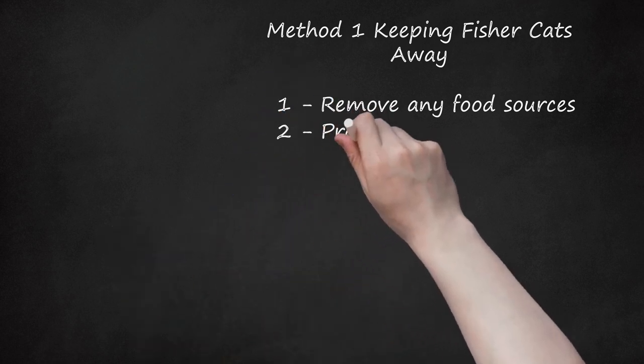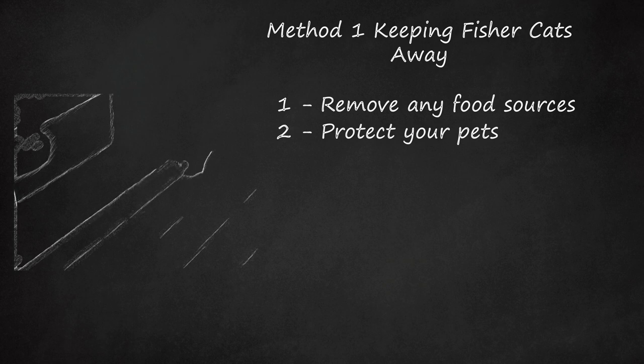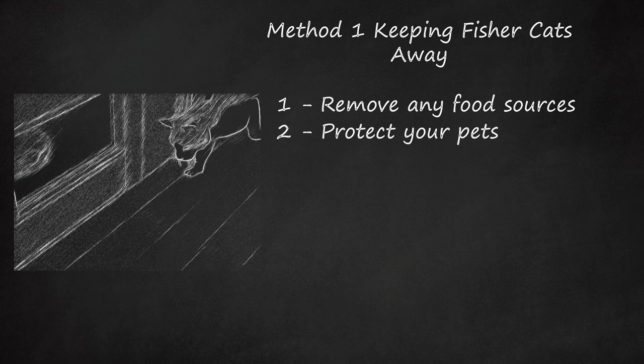Step 2: Protect your pets. Fisher cats are vicious predators, so don't assume that small pets will be any match for them. Protect them to ensure they are safe. Fisher cats have been known to stalk and kill house pets. Occasionally, fisher cats go after and kill house cats, so if you're having a fisher cat problem, keep the house cat inside, as well as any small dogs.